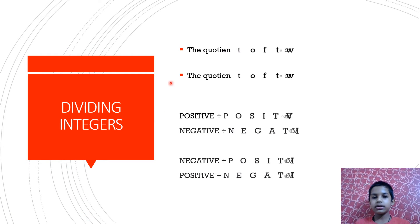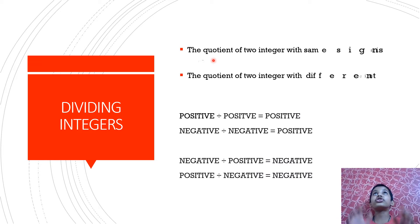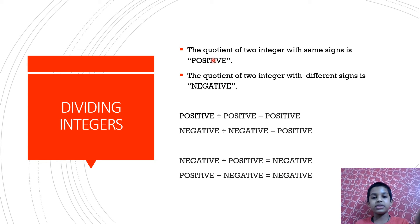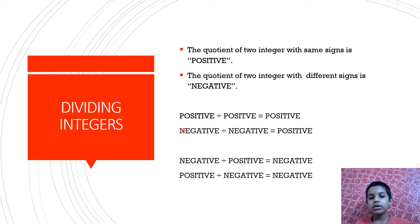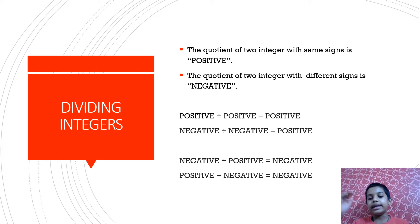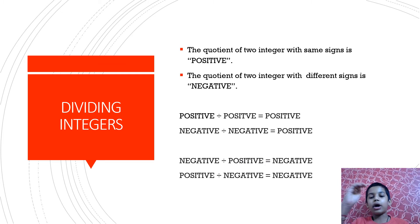Dividing integers. The quotient of two integers with the same sign is always positive. The quotient of two integers with different signs is negative — the same rules as multiplication. Positive divided by positive is positive. Negative divided by negative is negative. Negative divided by positive results in negative, and positive divided by negative results in negative. They are not that tough.